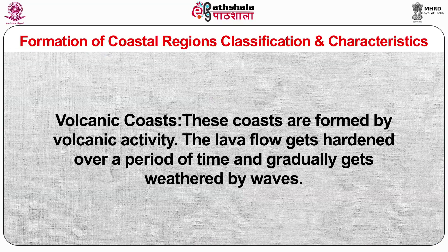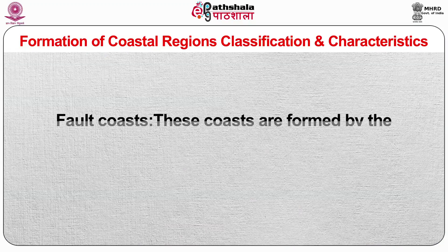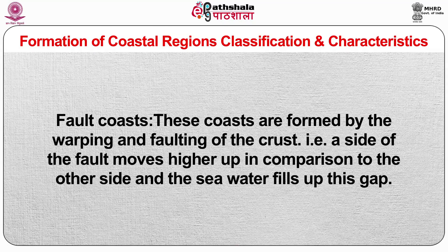Volcanic coasts are formed by volcanic activity. The lava flow gets hardened over a period of time and gradually gets weathered by waves. These coastal landforms are formed either by volcanic explosion or collapsing of a volcano. Fault coasts are formed by the warping and faulting of the crust, where one side of the fault moves high up in comparison to the other side and sea water fills up this gap.